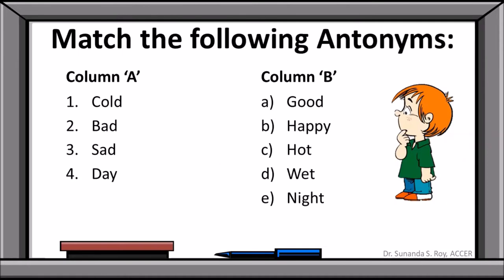There's another exercise: Match the Following. This question is 'match the following antonyms', that is, opposites. There are two columns — Column A and Column B. We have four words under Column A but five options under Column B. We normally put in an extra option so that students can't just guess the last answer by elimination, which wouldn't indicate whether they really know the answer.